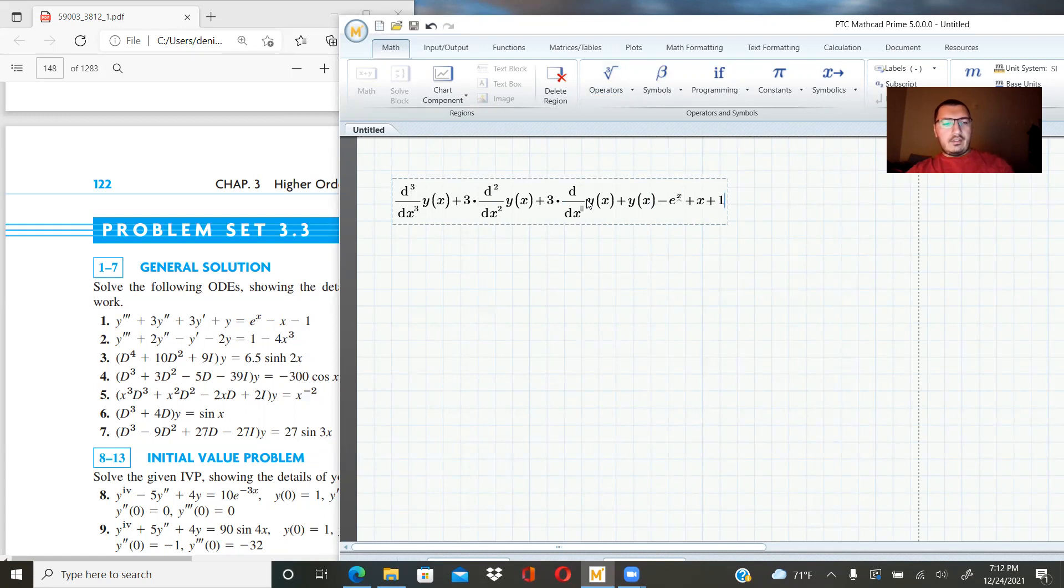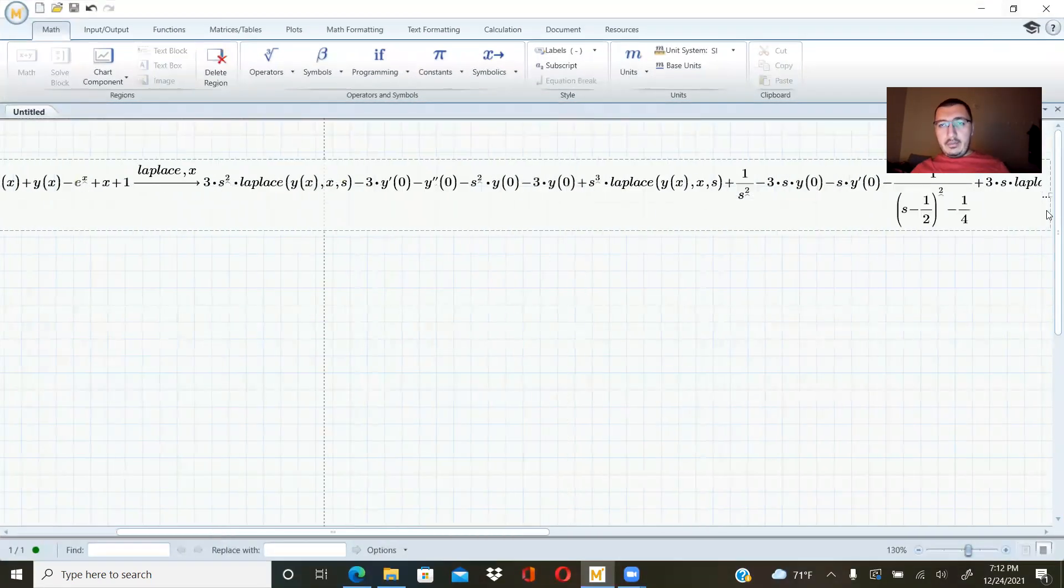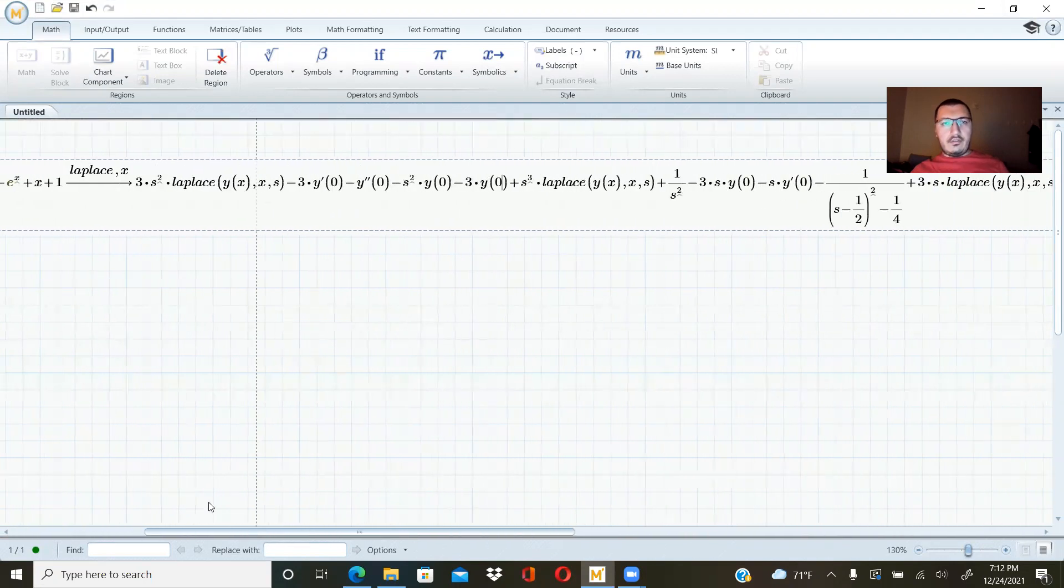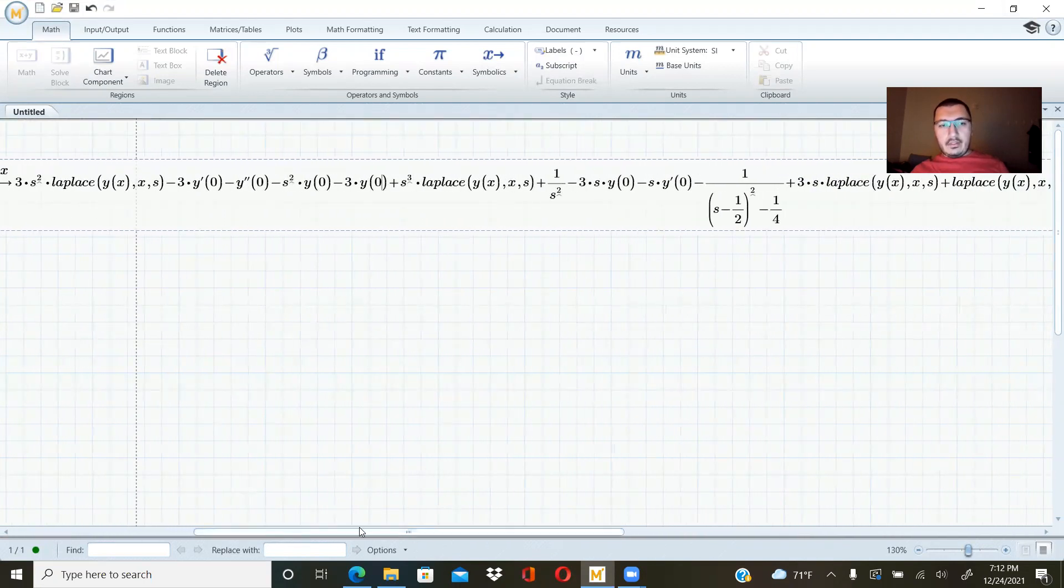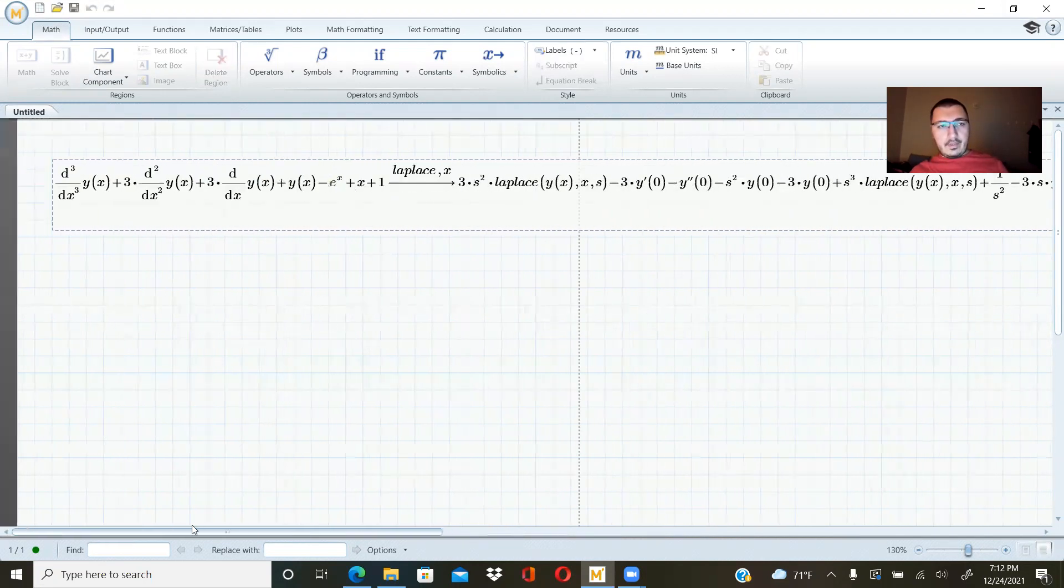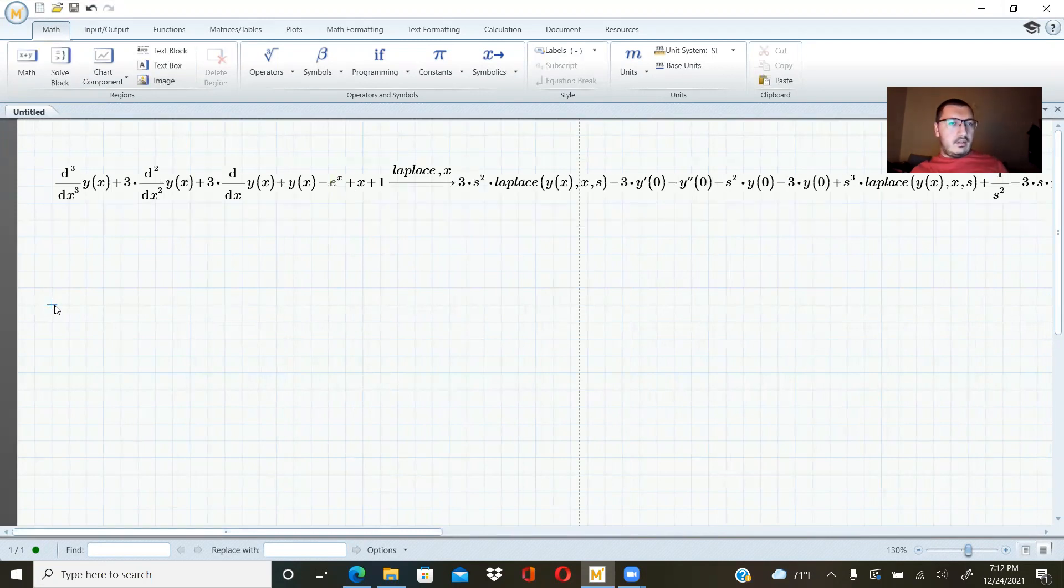Now what I will do is clicking control plus c, control and c on my keyboard and I will write here, Laplace in terms of x, this is the solution of my MathCad. This is the Laplace transform of my expression, which is equal to zero. Now, what I will do is basically copying the old expression, control c, and paste on an empty area, does not matter where it is, control v.